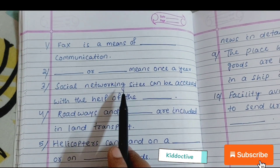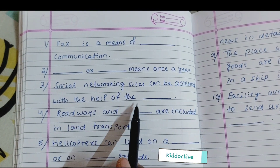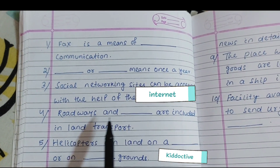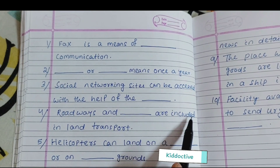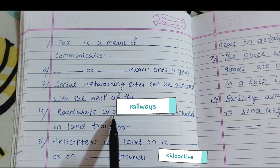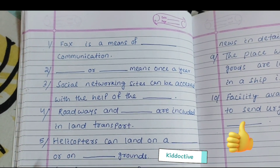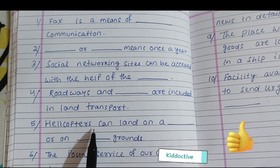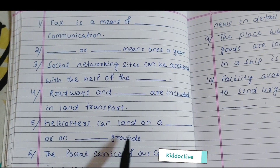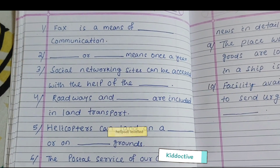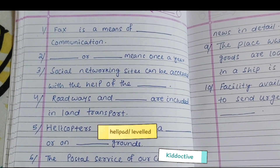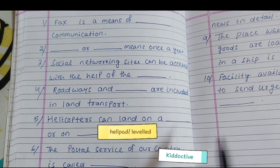Social networking sites can be accessed with the help of the internet. Roadways and railways are included in land transport. Helicopters can land on a helipad or on labelled grounds.